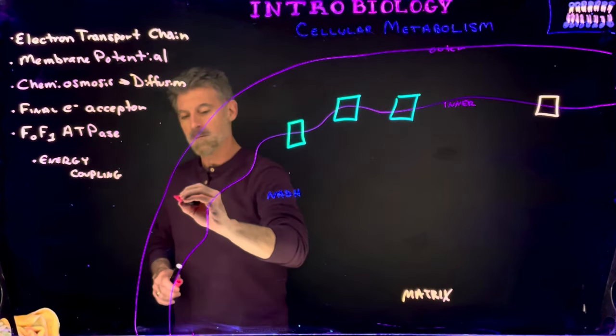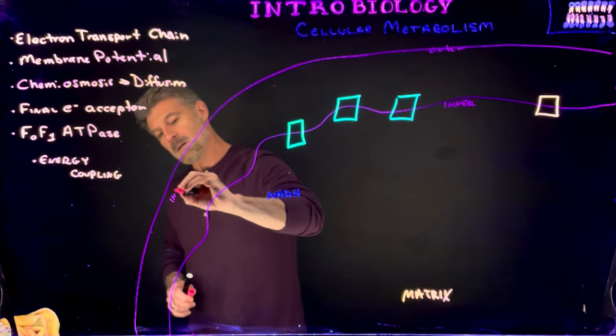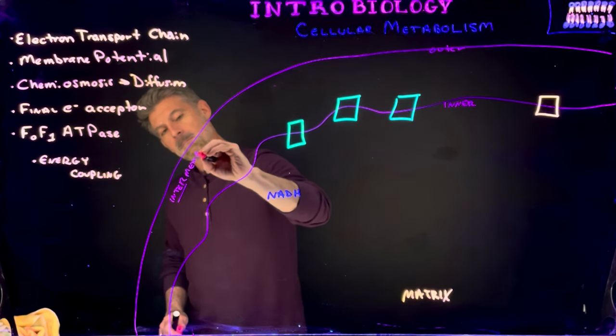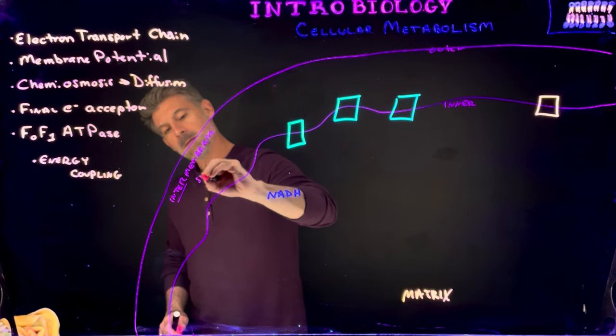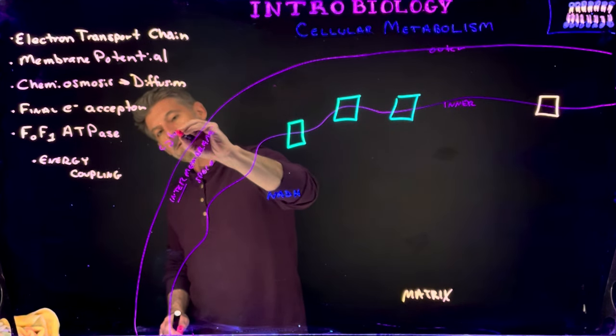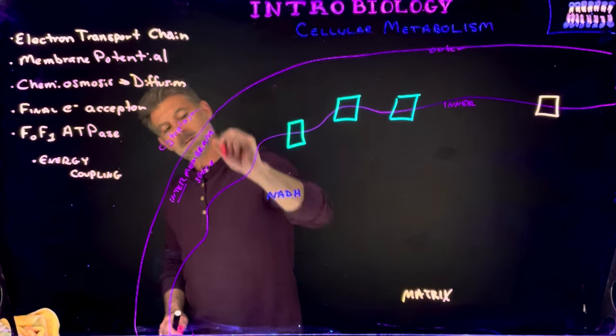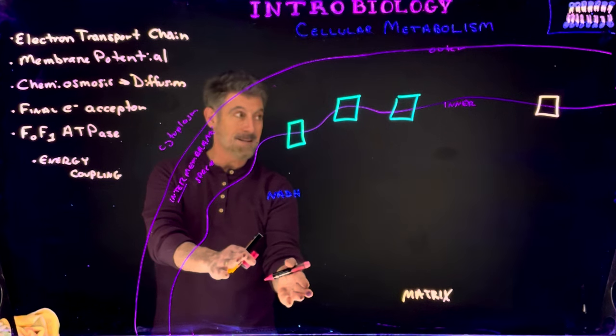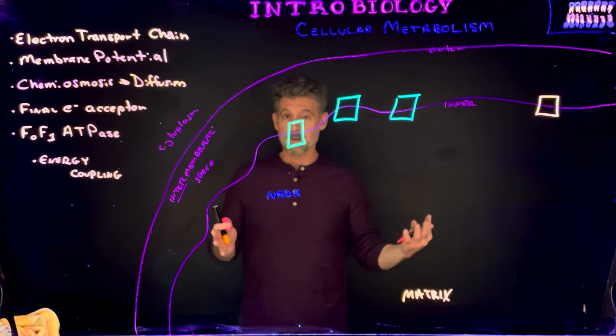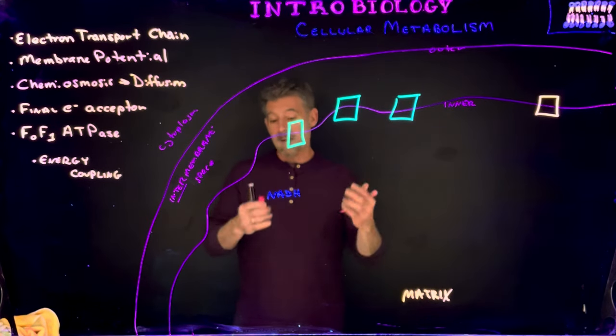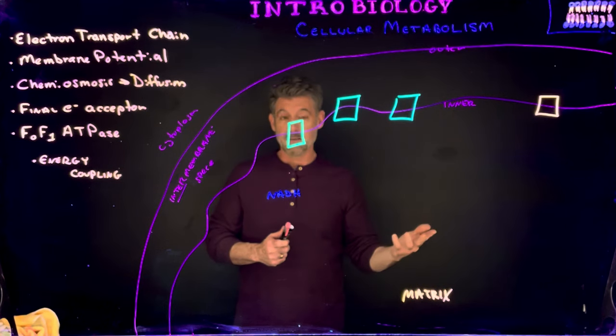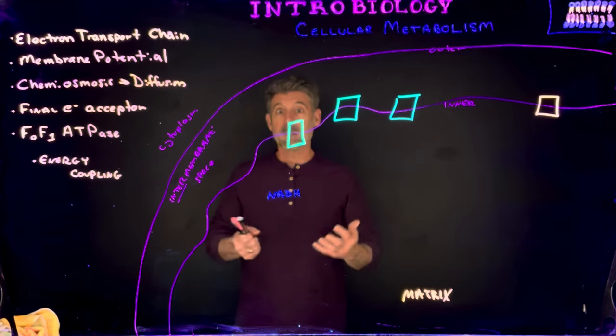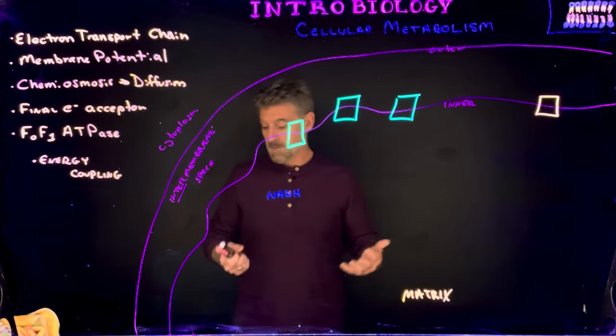And this would be the cytoplasm out here. So you have cytoplasm, space between two membranes, and then the matrix inside the mitochondria. Cells have many mitochondria depending on the type of cell and how active it is. Fat cells would have very few mitochondria. Muscle cells have a lot of mitochondria.